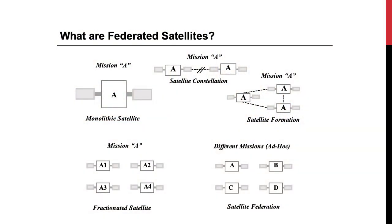How are Federated Satellite Systems defined? Let us have a look at this chart to clarify. On the upper left, we have the schematic representation of a monolithic single satellite performing its mission. Satellite constellations, in the middle, are made of a number of satellites all performing the same mission in a typical String of Pearls configuration. Satellite formations on the upper right are of similar nature — two key differences are that they typically employ more complex network topologies and engage a smaller number of spacecraft flying in closer proximity with each other.